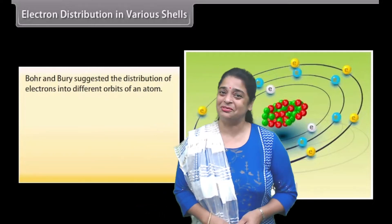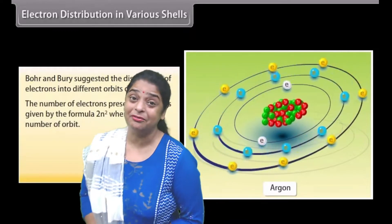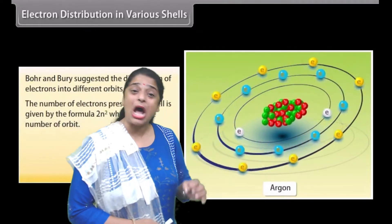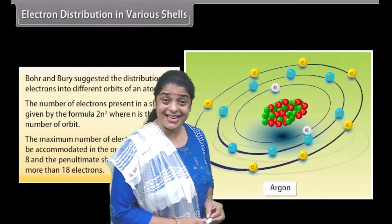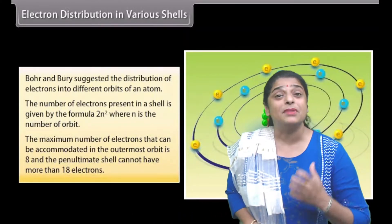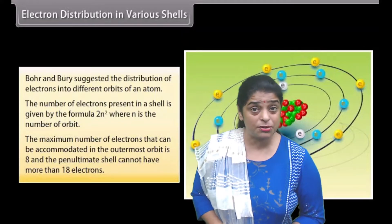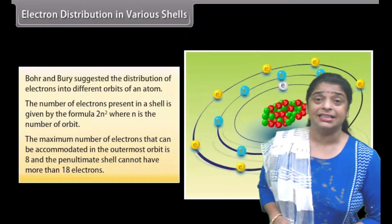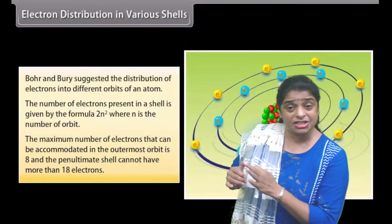Hello my dear students, welcome to my channel again. Today I am going to discuss with you a very important and interesting topic in chemistry — that is, how electrons are distributed in an atom. Bohr suggested that every atom has some definite energy level shells where electrons are distributed according to their fixed energy levels.